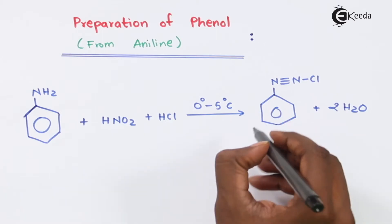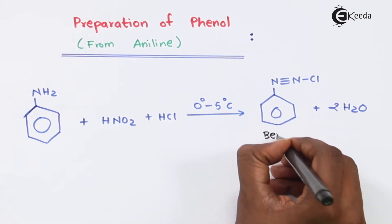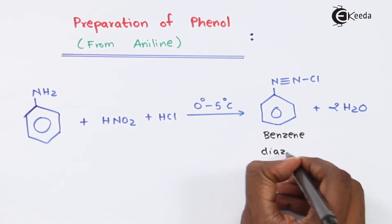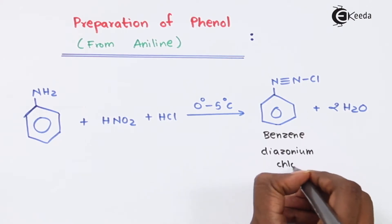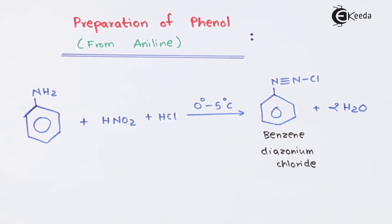Therefore the name of the product we have obtained is benzene diazonium chloride. There are two nitrogen groups attached to each other, and that is the reason the name is diazonium chloride.